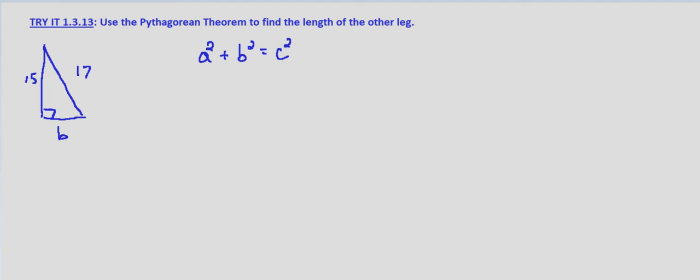In this case, we're given a, which is 15, so we substitute 15 squared plus b squared equals, and then the length of the hypotenuse c is 17 squared.